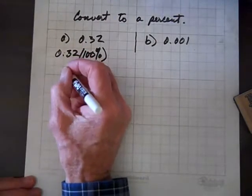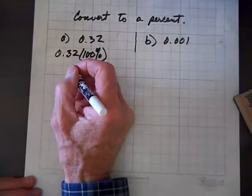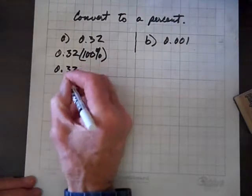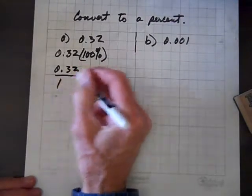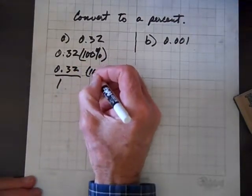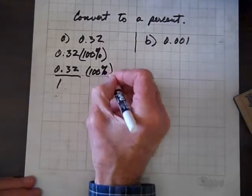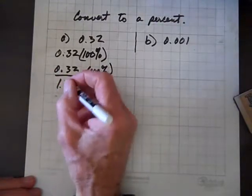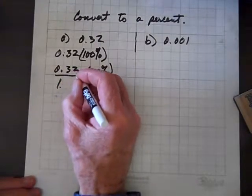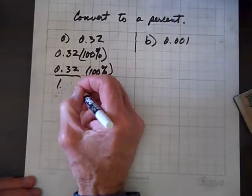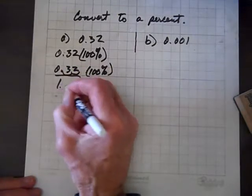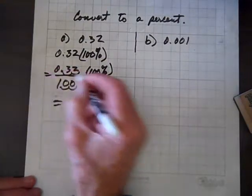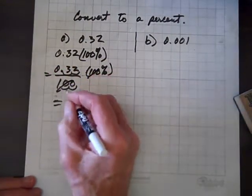Let's rewrite this as 0.32 over 1, and now we have our 100% here. And keep in mind, that 1's understood, but I'm going to stick it there. And also, we can move this decimal over twice as long as we move this decimal over twice. So, we'll move it over twice, move this one over twice, fill in with zeros, and now the hundreds divide out.